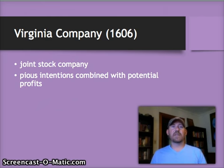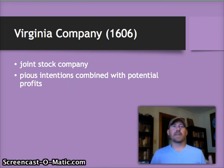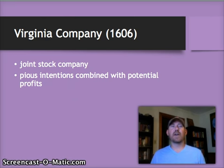One of the first joint stock companies was the Virginia Company in 1606, which was set up for the express reason of going over to the New World and founding a colony. The intentions of this joint stock corporation were kind of dual — part religious and part economic. The phrase I'm using here is pious intentions combined with potential profits. So while religion does play an aspect in the founding of the Southern colonies, there was also a profit motive to it that'll become more and more of a factor as we go forward.